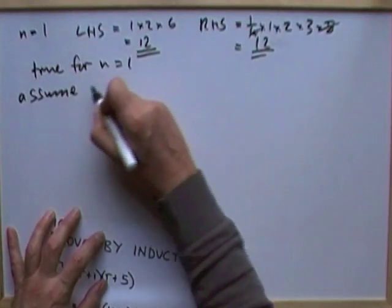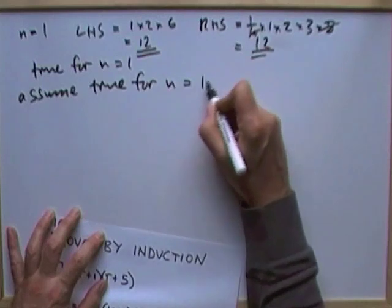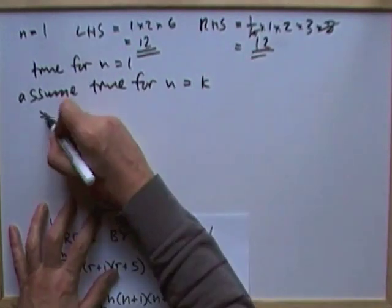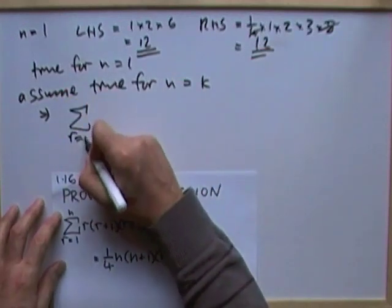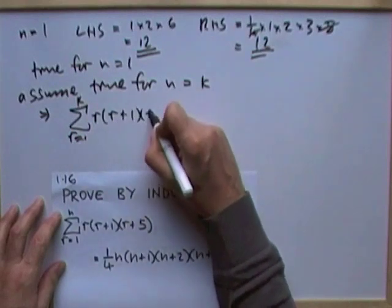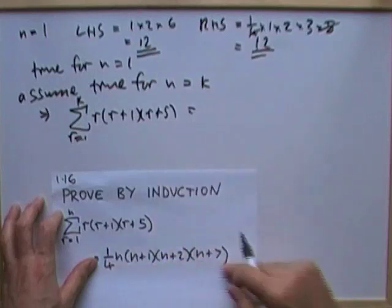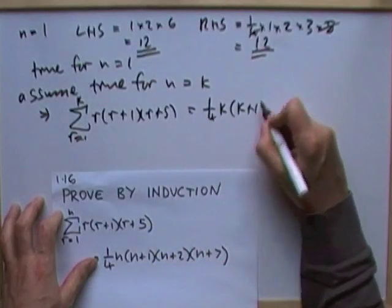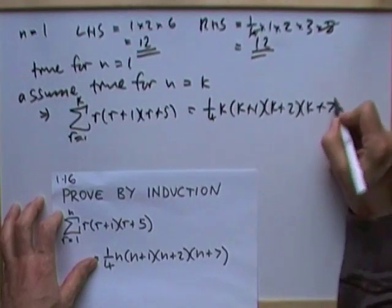Next, assume that it's true for n equals any arbitrary number k, in which case sigma r equals 1 to k of r(r+1)(r+5) should equal, with k's: one quarter k times (k+1) times (k+2) times (k+7).